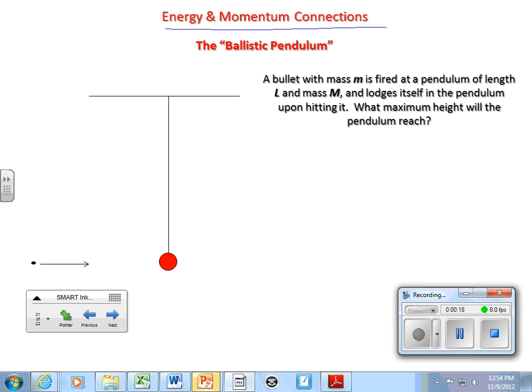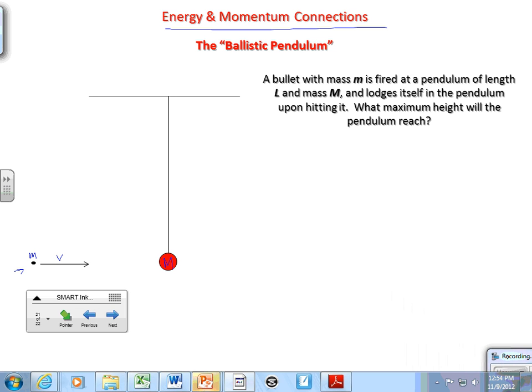All right, questions like this. This is a classic one. It's called a ballistic pendulum. We're talking about firing a bullet here, moving at a speed v, a bullet with mass m, into this pendulum with mass capital M. And then from there, this thing lodges, the bullet lodges inside the bob, the pendulum bob. It lodges in there. And the question is, how high does the pendulum then go, right?